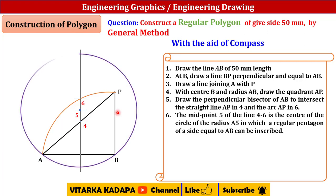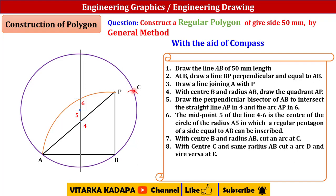From the radius A to 5, I am going to draw a circle. After drawing the circle, with center B and radius AB, cut an arc on the circle and term that point as C.